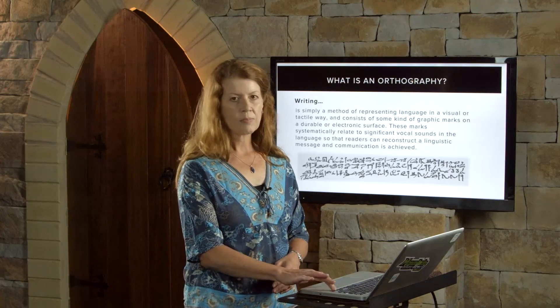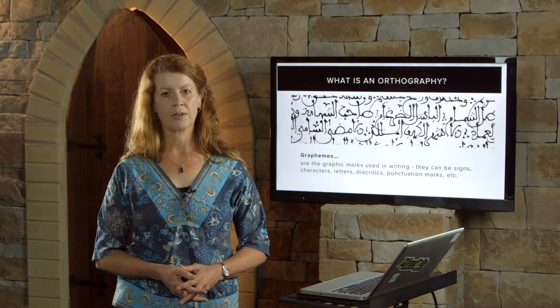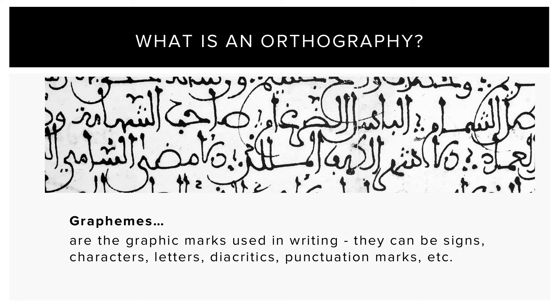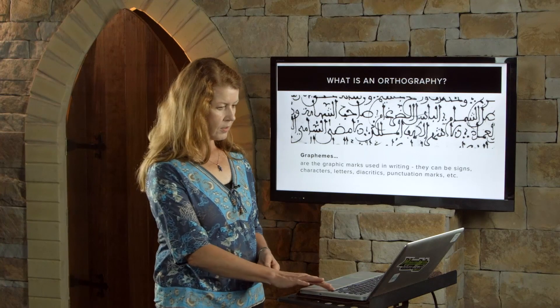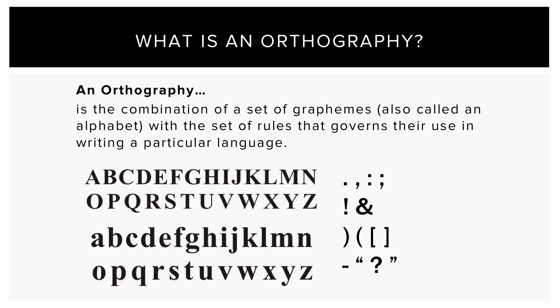The graphic marks used in writing are called graphemes, and they can be signs, characters, letters, diacritics, marks — anything that's written down in order to communicate. An orthography is the combination of a set of graphemes, also called an alphabet, with a set of rules that governs their use in writing a particular language.